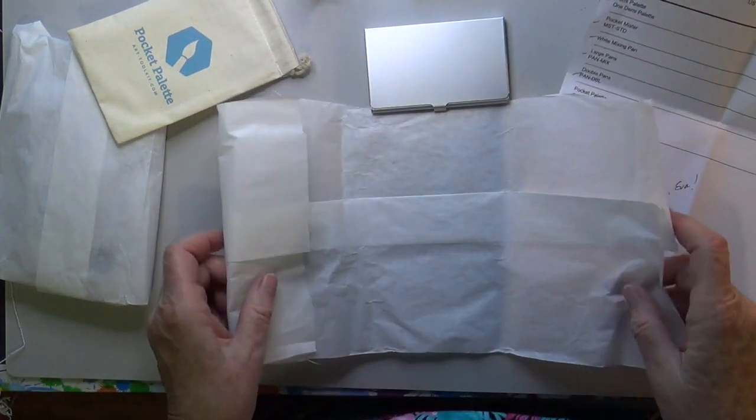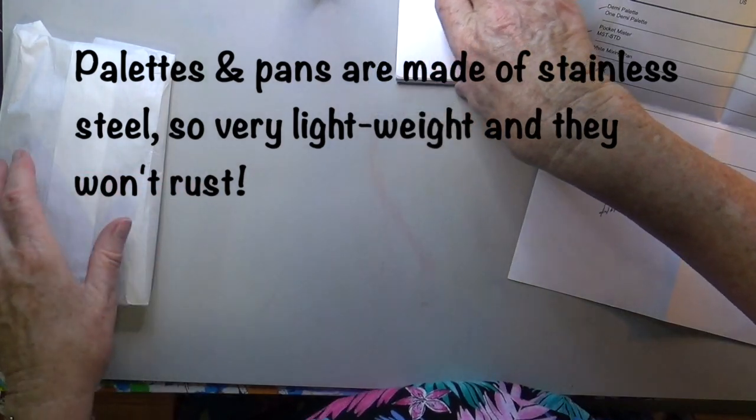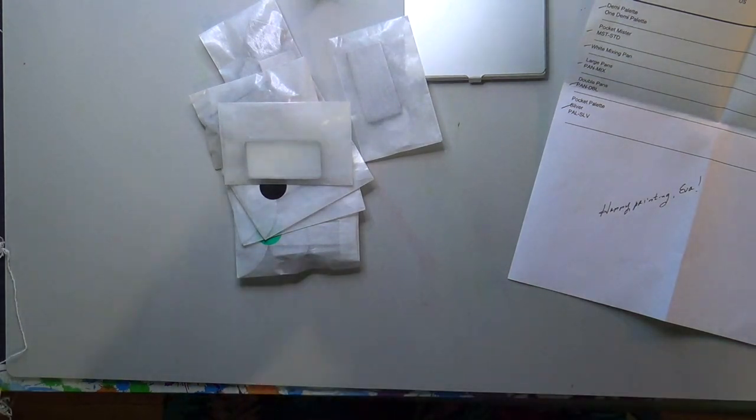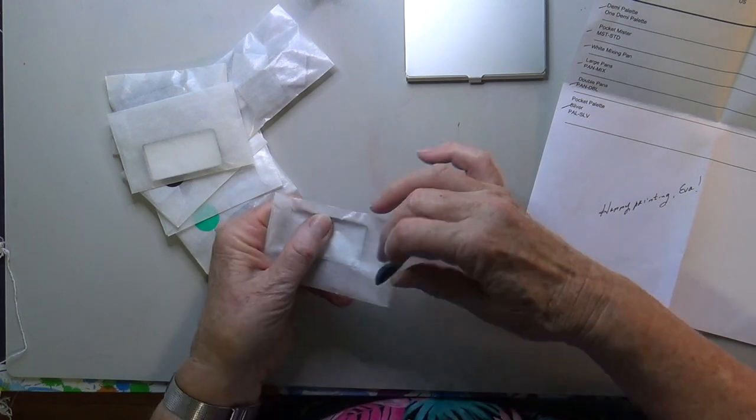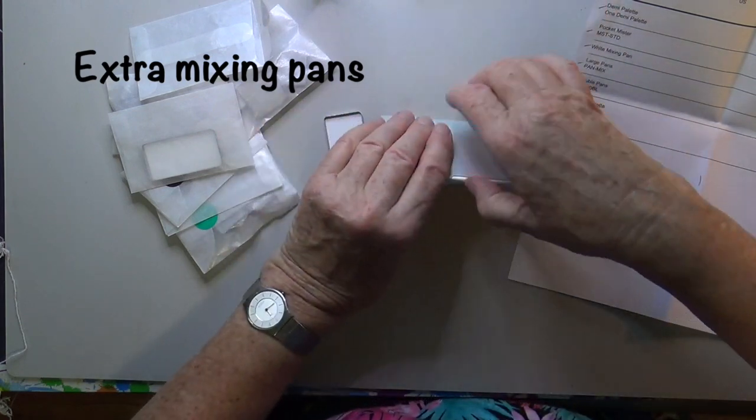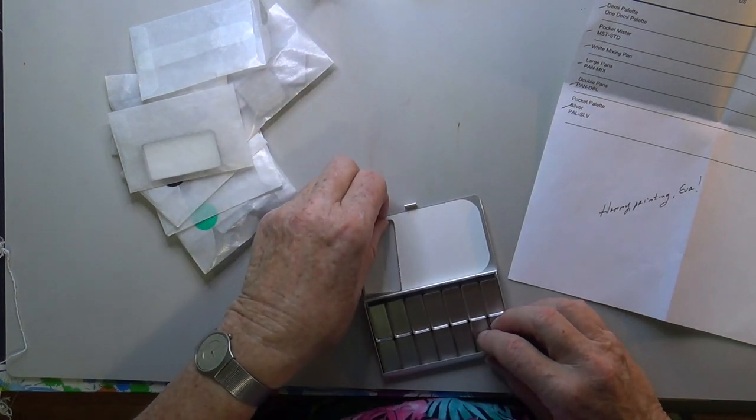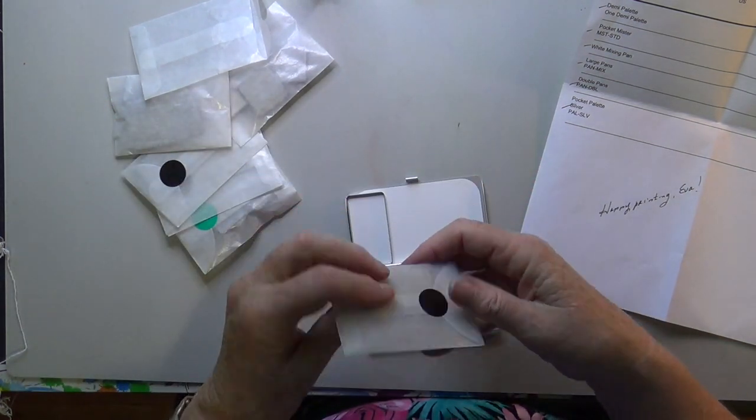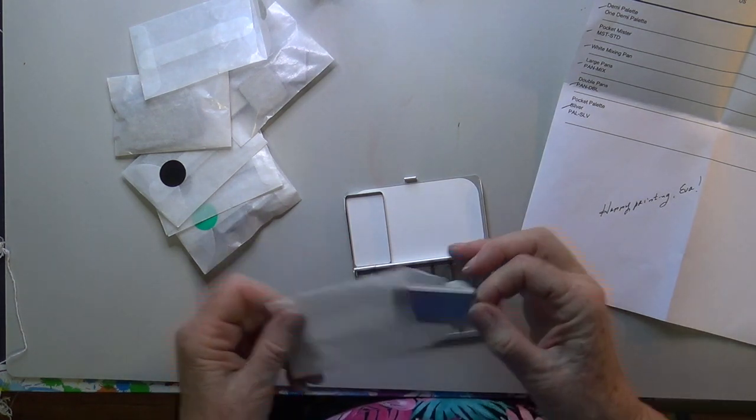Look how cute they are. It also has a pouch. I bought some extra pans because I'm not a fan of tiny little pans. I'd rather have fewer colors and then have a nice big area. Here, these are mixing pans, so you can use them to mix your colors in. They have the same white surface as the bottom there.